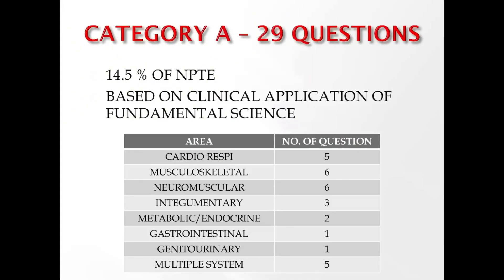Category A is clinical applications of foundational sciences for pediatric and adult populations. A total of 29 questions are asked, which is 14.5% of the NPTE. This category is subdivided into: cardiorespiratory, orthopaedic/musculoskeletal, neuromuscular, integumentary, metabolic, endocrine, gastrointestinal, genitourinary, and multiple system involvement — each with separate questions.